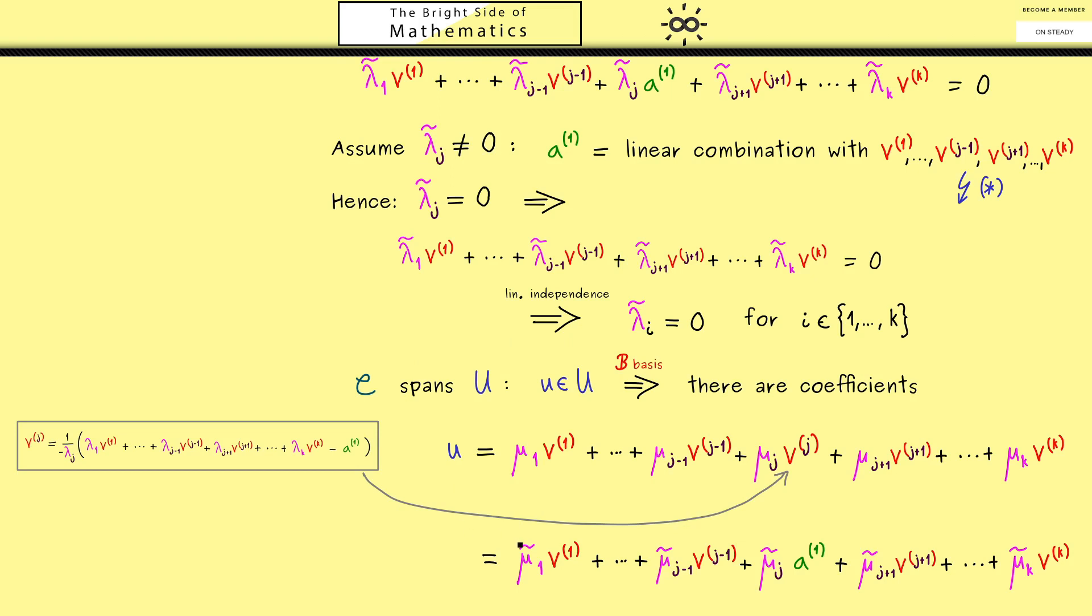Now, if L is bigger than 1, you have to exchange more vectors than just 1. But you can reuse a lot of these arguments here. Okay, the important thing is it works. And we can conclude that the number of basis elements in a basis for a vector space U is fixed. And this will help us in the next video when we talk about the notion of the dimension of a subspace.